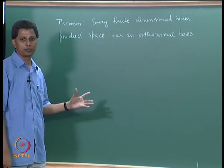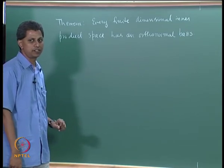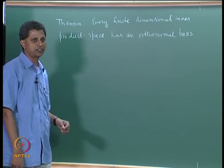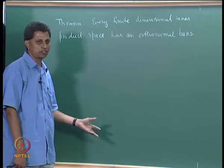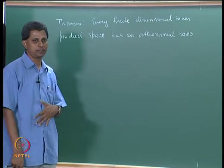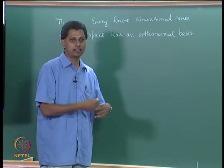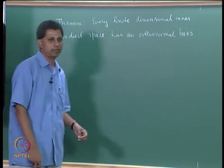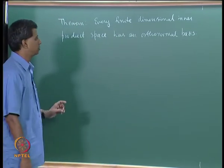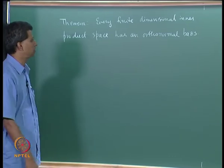The proof: it is a finite dimensional inner product space, so it has a basis consisting of finitely many elements. Since it is a basis, it is linearly independent. Apply the Gram-Schmidt process to that to get an orthonormal set. The fact that the spans are the same proves that this is an orthonormal basis also. You can write down the proof on your own.